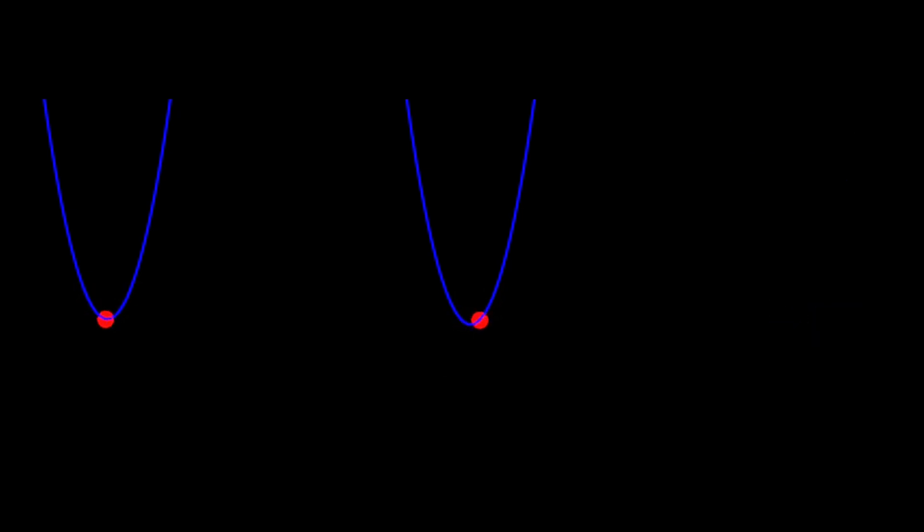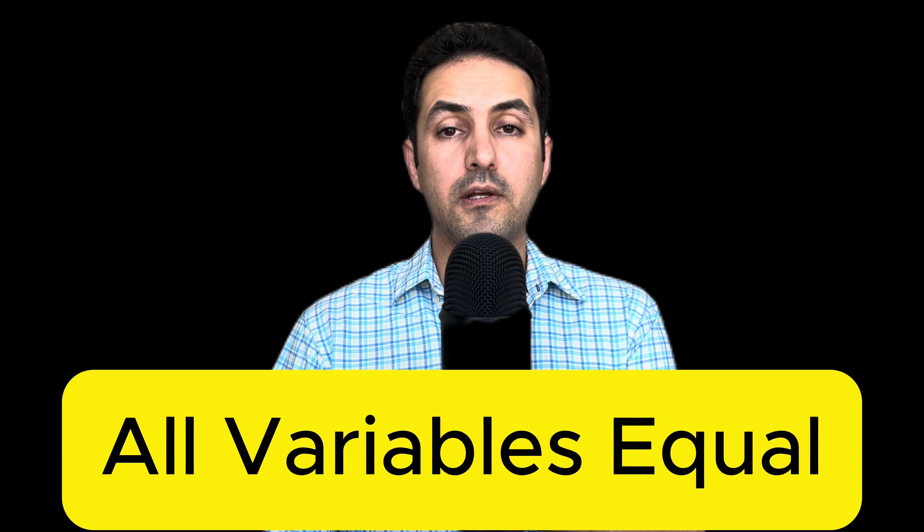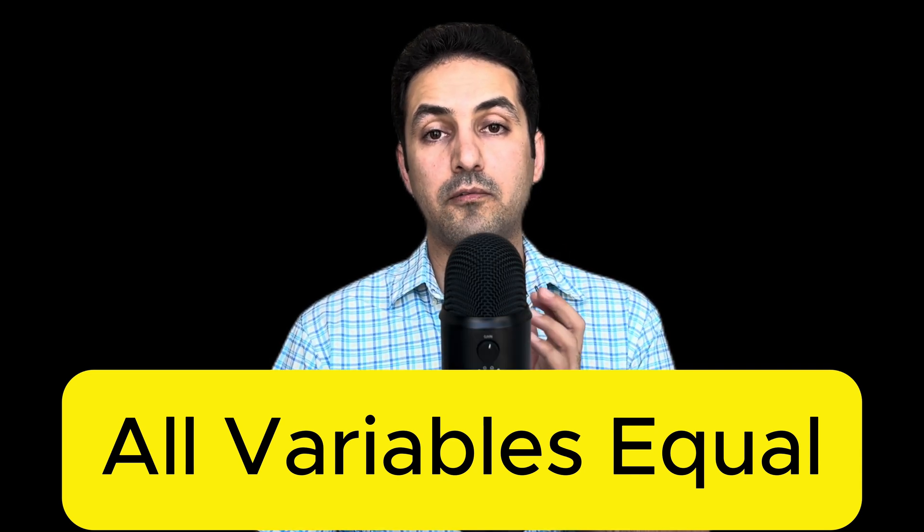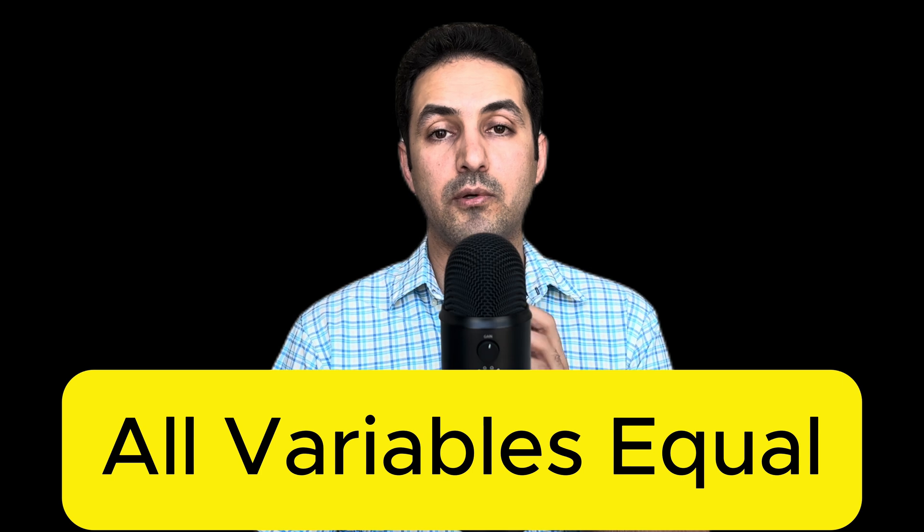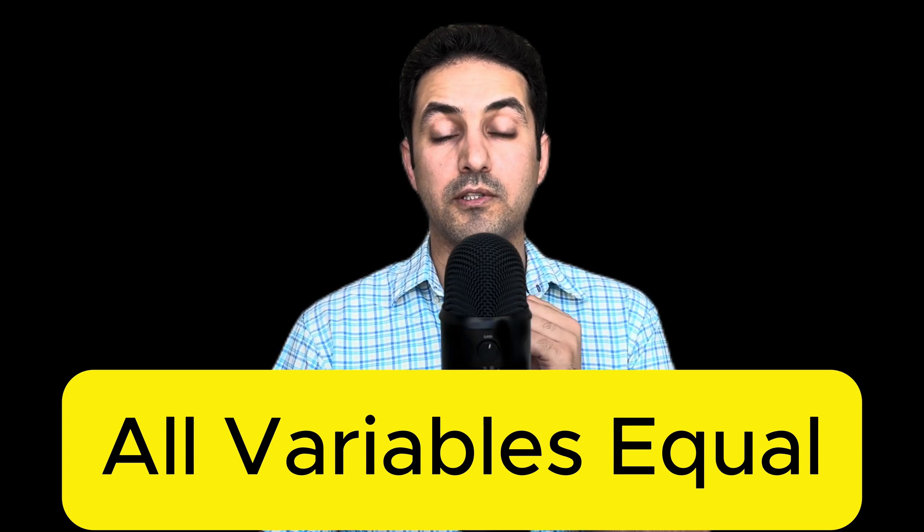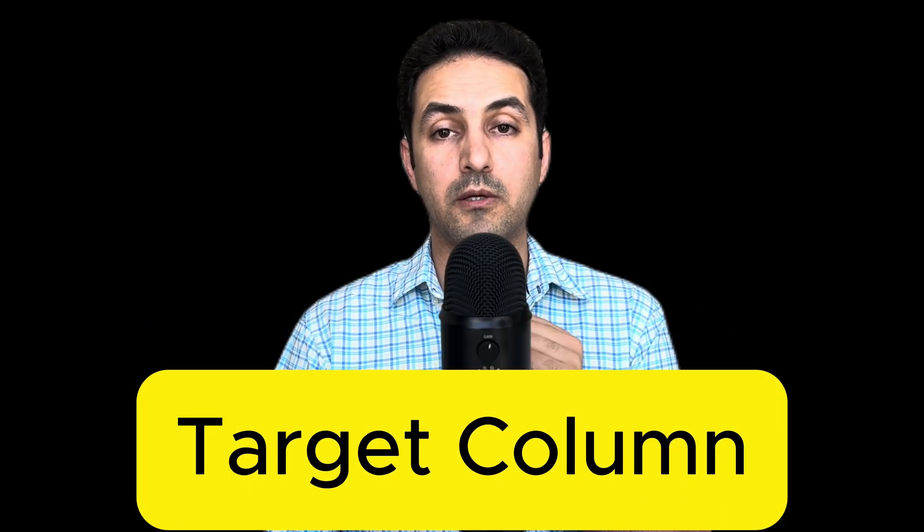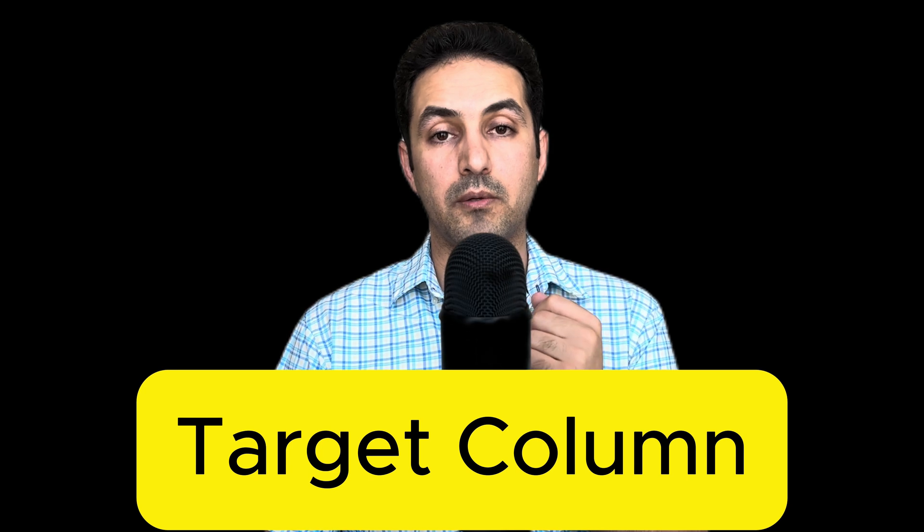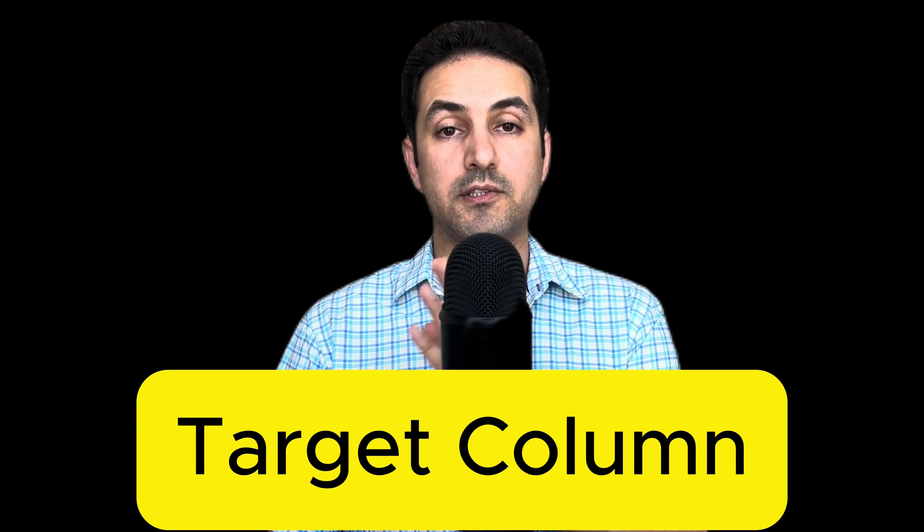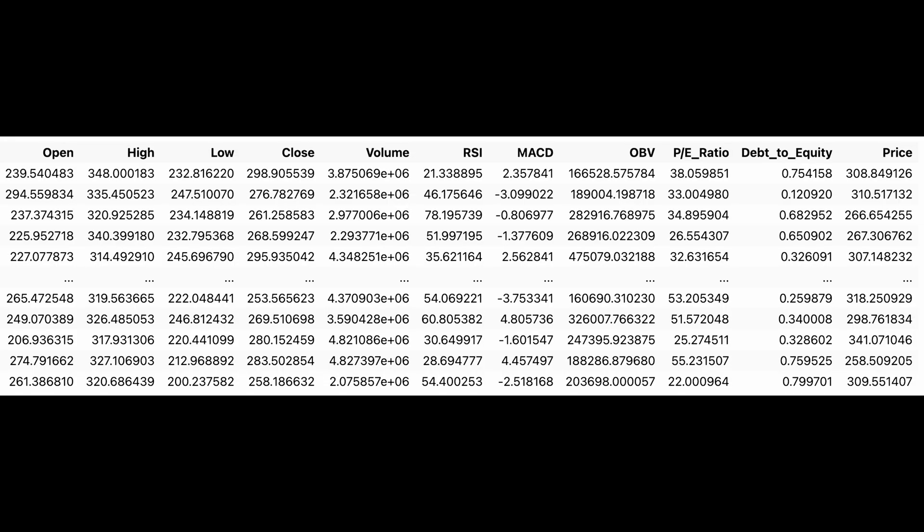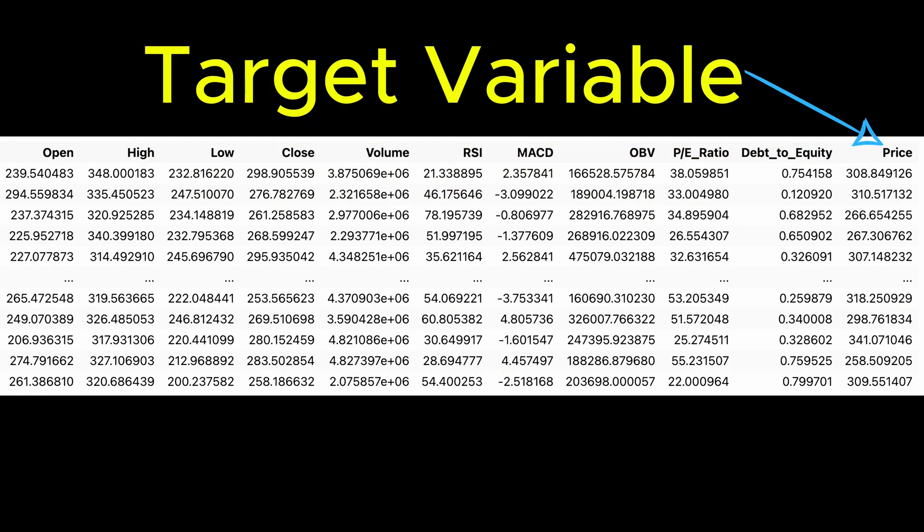So far we have treated all the columns of our spreadsheet equally. From a probabilistic point of view—the god equation point of view—none of these variables are special. But sometimes it is in our interest to predict one or more of these variables given the rest. For example, in the stock market we usually want to predict the price, so that column of the spreadsheet becomes the target of my prediction.